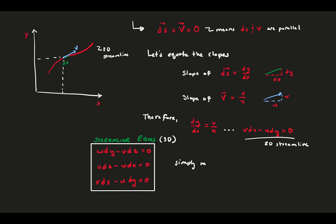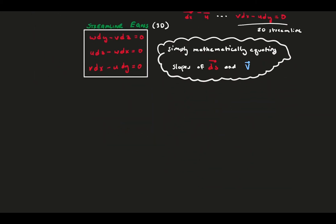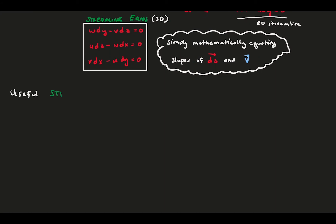Remember, we haven't done any complex derivation here. We have simply defined a curve that passes smoothly through the velocity field, and then defined it mathematically by equating the slopes of the two vectors. However, the streamline itself is quite powerful and is a useful tool in aerodynamics.